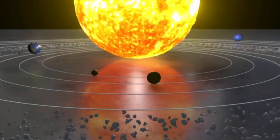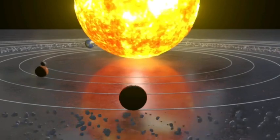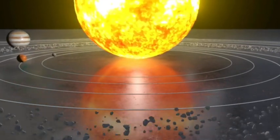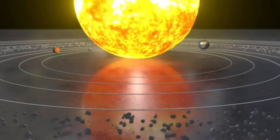One Neptune year is equal to 165 Earth years. Sometimes the distance of Neptune from the Sun is further than the distance of the dwarf planet Pluto.